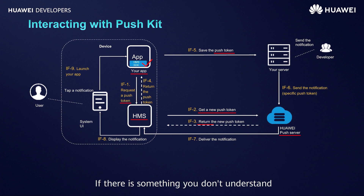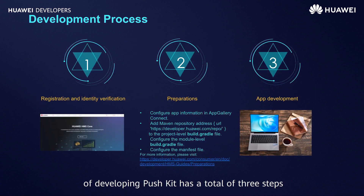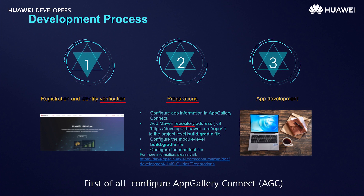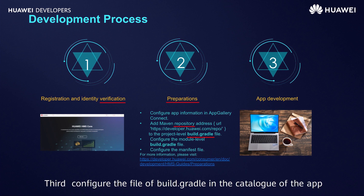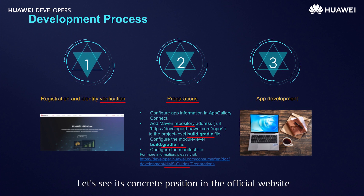If there is something you don't understand, developers can refer to the Huawei developer website. Next, we will talk about the process of connecting PushKit. The process of developing PushKit has a total of 3 steps. Step 1: Register the account of Huawei Developers and conduct real-name authentication. Step 2: Prepare the work before development, which includes 4 steps: configure App Gallery Connect, add Huawei's Maven warehouse to the project's build, configure the build file, and configure the manifest file. Detailed steps can be seen on the official Huawei Developers website. Let's see its concrete position.